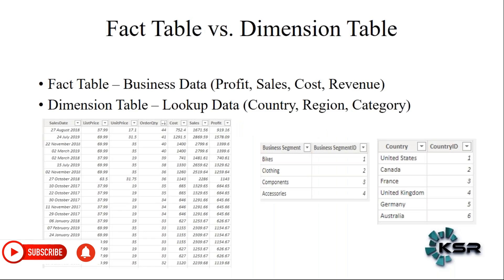In most cases, a fact table is a table which will have the actual business data. What is actual business data? Examples could be profit, sales, revenue — these are all the key values which determine your business. That is what is grouped as the fact table. We add information like sales cost or profit that is happening over different dates. This is a very good example of a fact table.